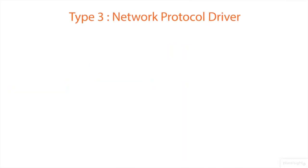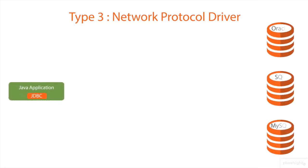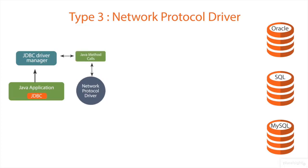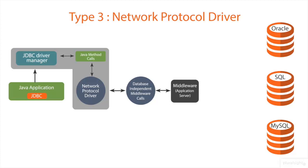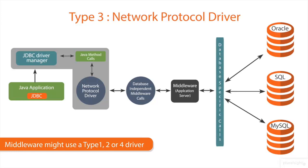Now let us understand the Type 3 driver, that is, the network protocol driver, also called the middleware driver. Whenever a Java application uses the Type 3 driver, the Java method calls are sent to the network protocol driver, which converts the JDBC calls into database-server-independent, middleware-specific calls. These are passed to the middleware, which acts like an application server and converts the middleware-specific calls into database-specific calls. The middleware may use a Type 1, 2, or 4 driver to communicate with the database.